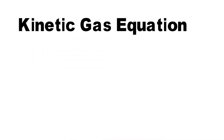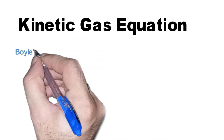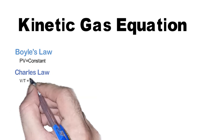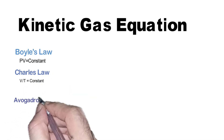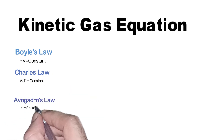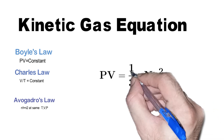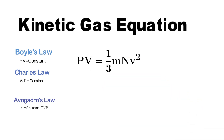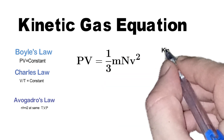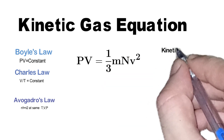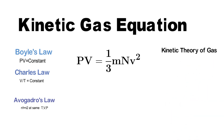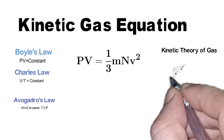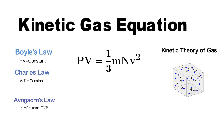Hello, today we are going to explain and derive Boyle's law, Charles' law, and Avogadro's law from the kinetic gas equation and kinetic gas theory. The kinetic gas equation is PV = 1/3 mnV². We have derived this equation in one of our previous videos. The kinetic theory of gas explains the behavior of gas.